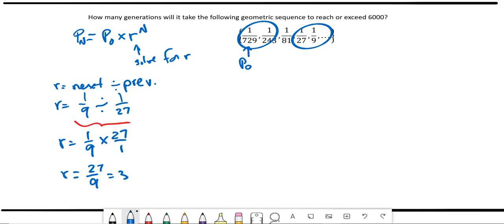And you can check this if you want. You can take a different pair of numbers and see that you'll get the same thing. If you were to take 1/243 and divide by 1/729, you will get 3 again. And I'll leave that for you to explore.